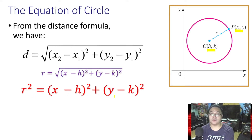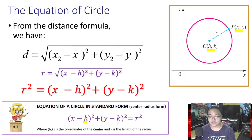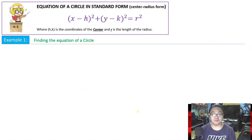This is what we call the standard form of the equation of a circle — sometimes called the center-radius form — because it easily gives us the center, located at coordinate (h, k), and the radius, which is the square root of r squared.